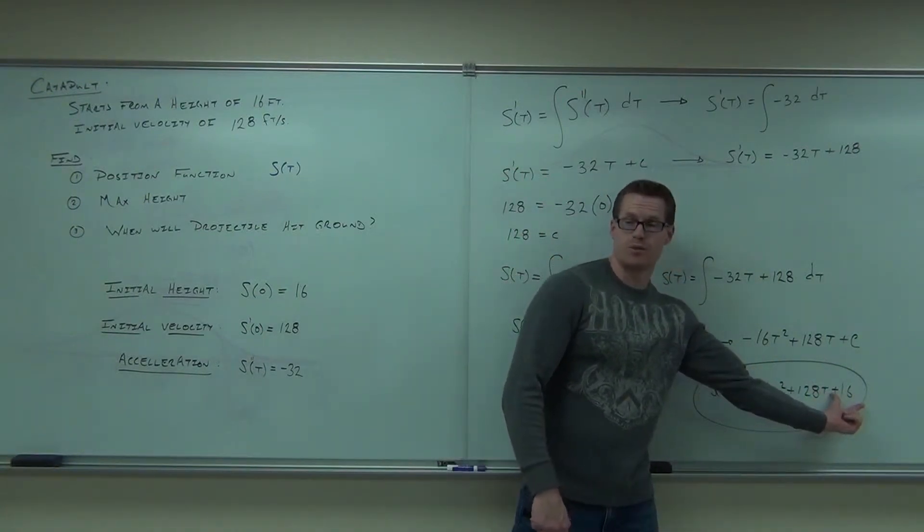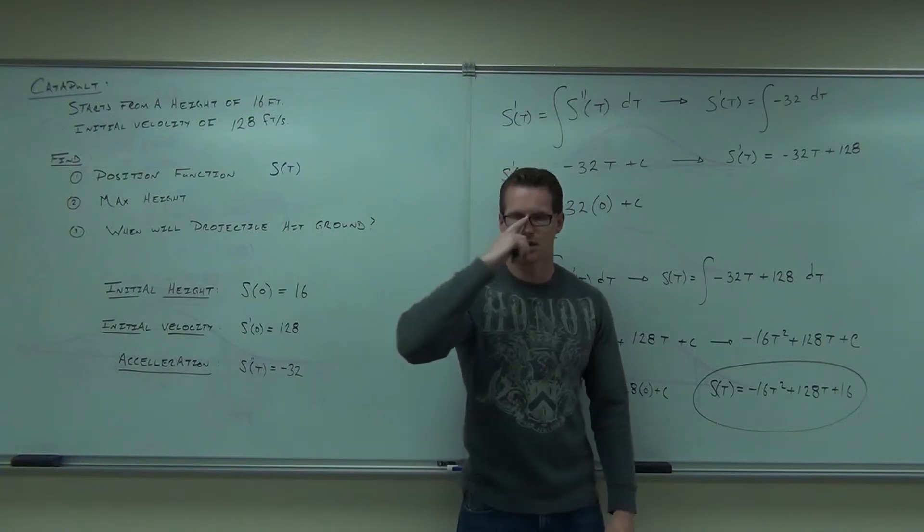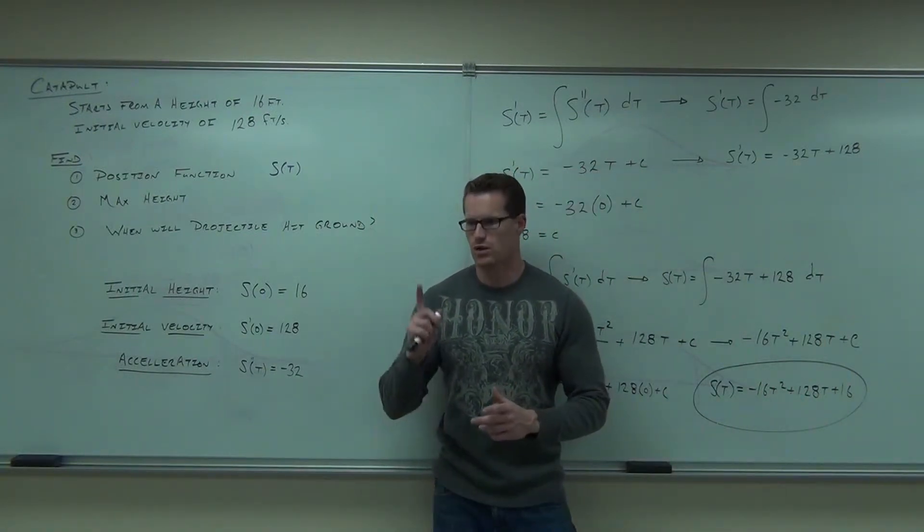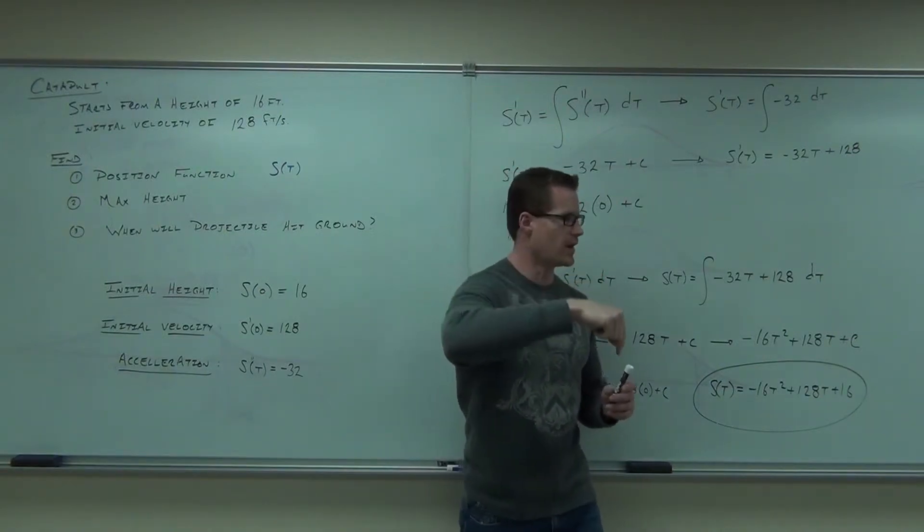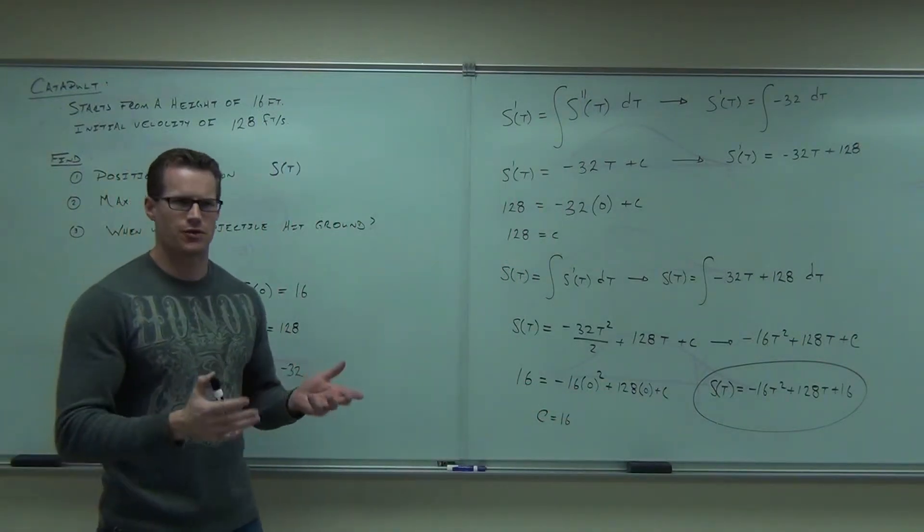What's this? What's that come from? That's the initial height. In fact, if you plugged in time equals 0, you get 16, right? So you start from 16 feet. What's this from? That has to do with your initial velocity. When you start out, what are you at? So basically, I'm shooting something off and then letting gravity take its effect on that. And that's what that says.